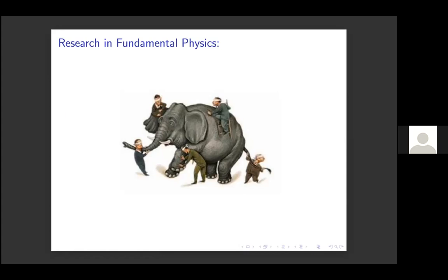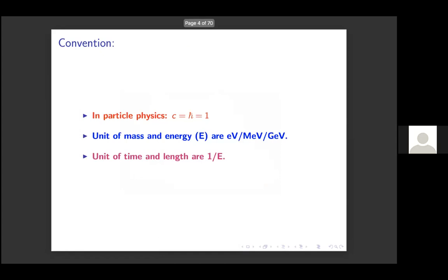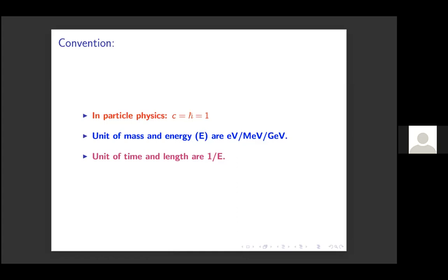For students, in high energy physics our convention generally for calculations is to make things easy by setting c and ℏ equal to one. When you take them as one, your units of mass and energy become the same — either electron volt, million electron volt, or giga electron volt — and the unit of time and length become one over energy. This is a mere convention, and whenever you need proper units you put back c and ℏ to get your exact units.